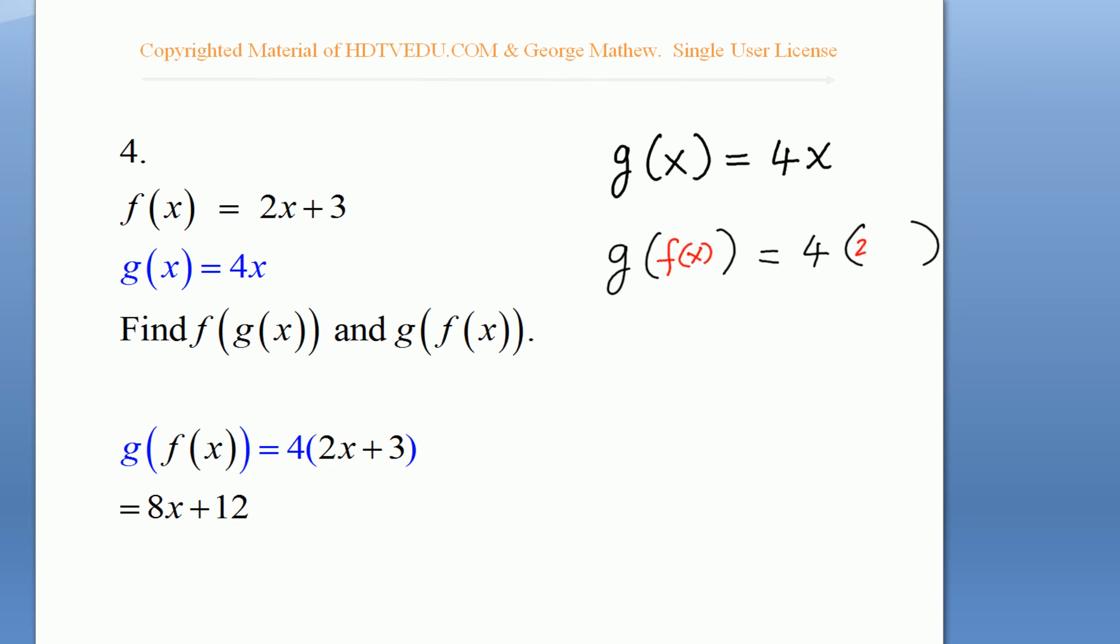f of x is 2x plus 3, and so this is equal to 4 times 2x plus 4 times 3. And that is 8x plus 12, 8x plus 12.